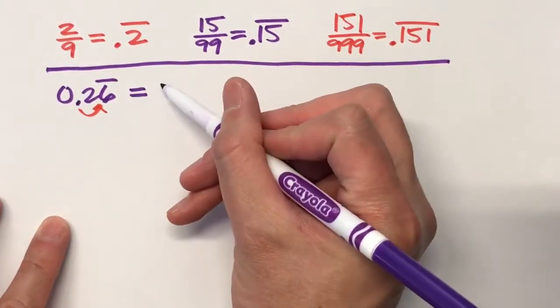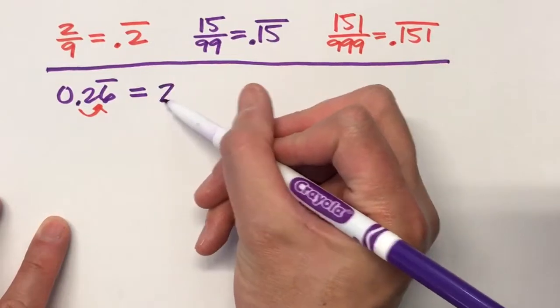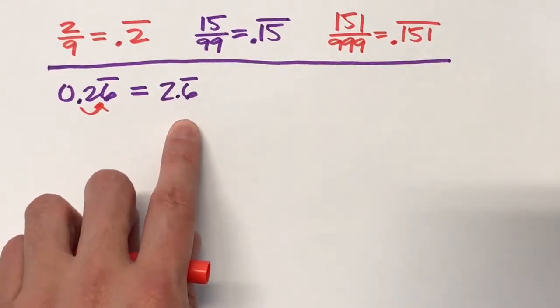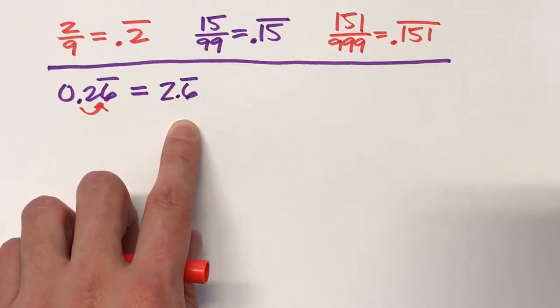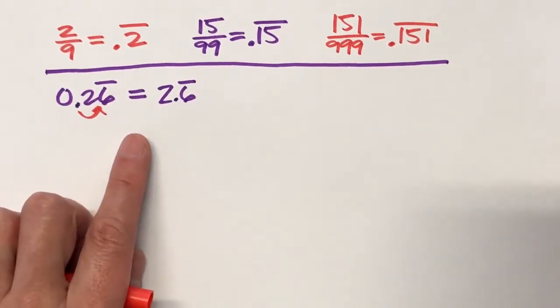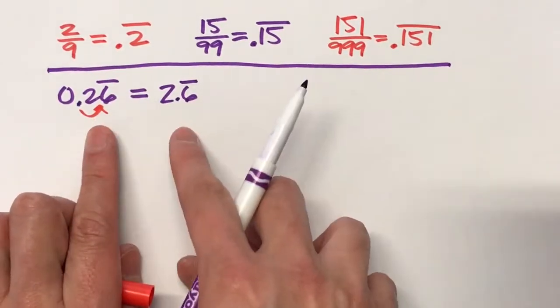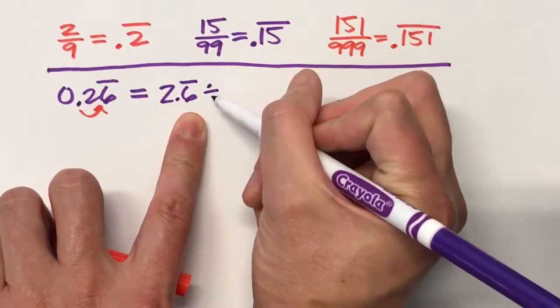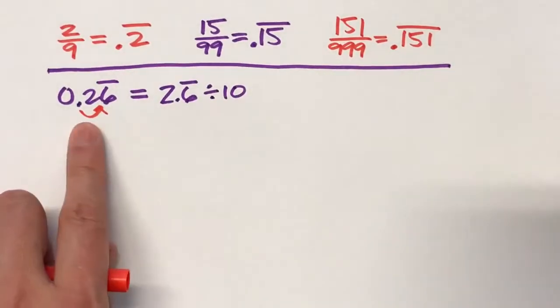This would be equal to, if we move the decimal over, 2.6 repeating. And that we could change into a fraction pretty easily. But unfortunately, it's not equal to that. However, we can use a little math to set these two sides equal to each other. 2.6 repeating divided by 10 equals 0.26, which is the 6 repeating.